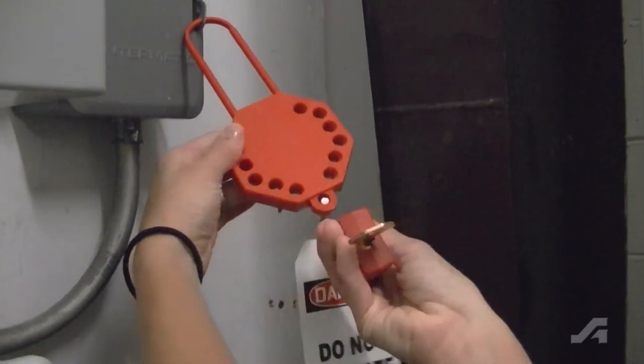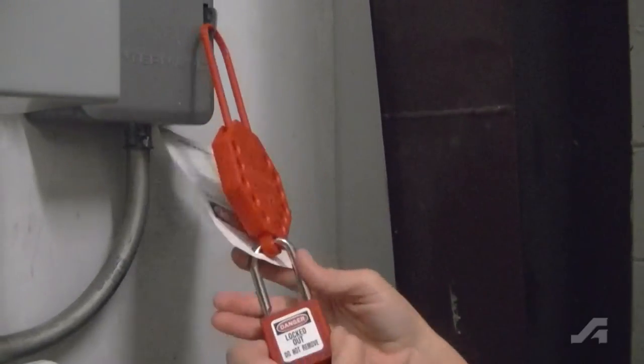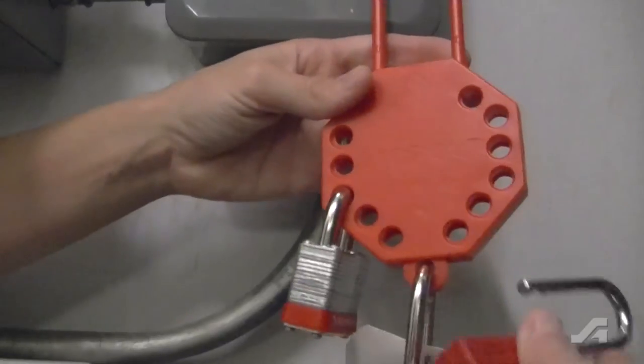The stop out group lock hasp is lightweight, fits in the palm of the hand, and has an all-dielectric plastic design.